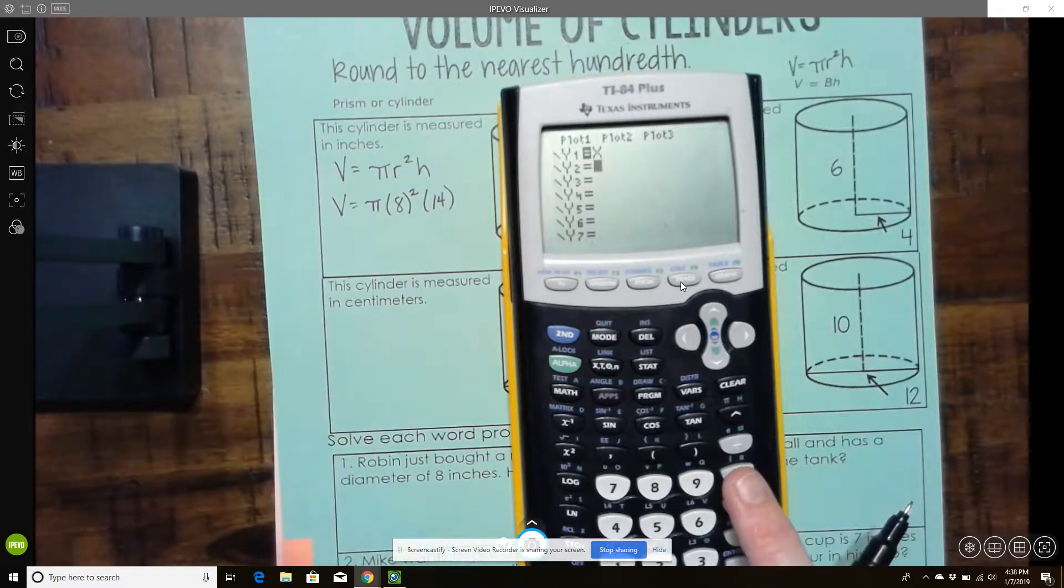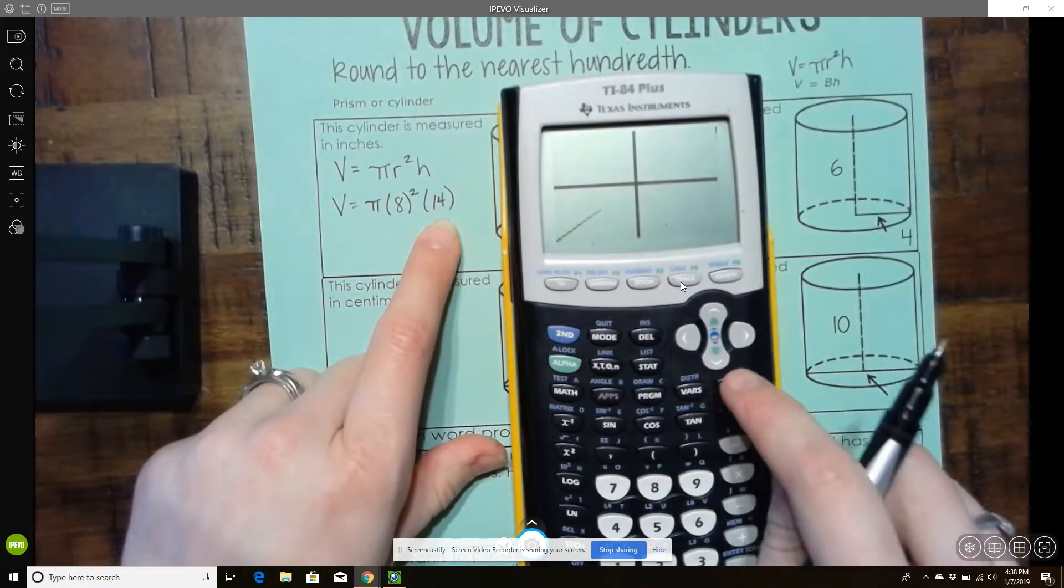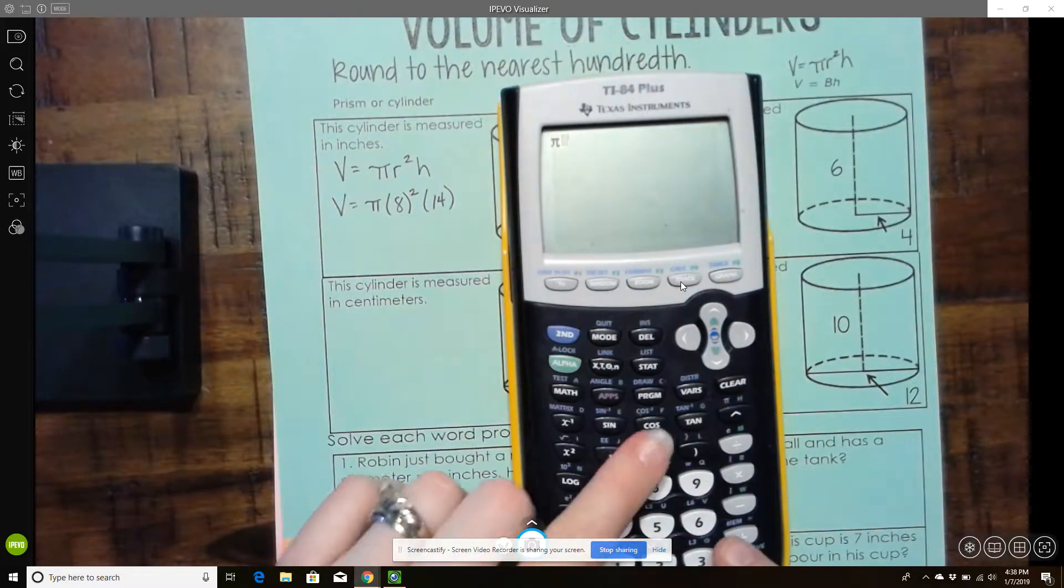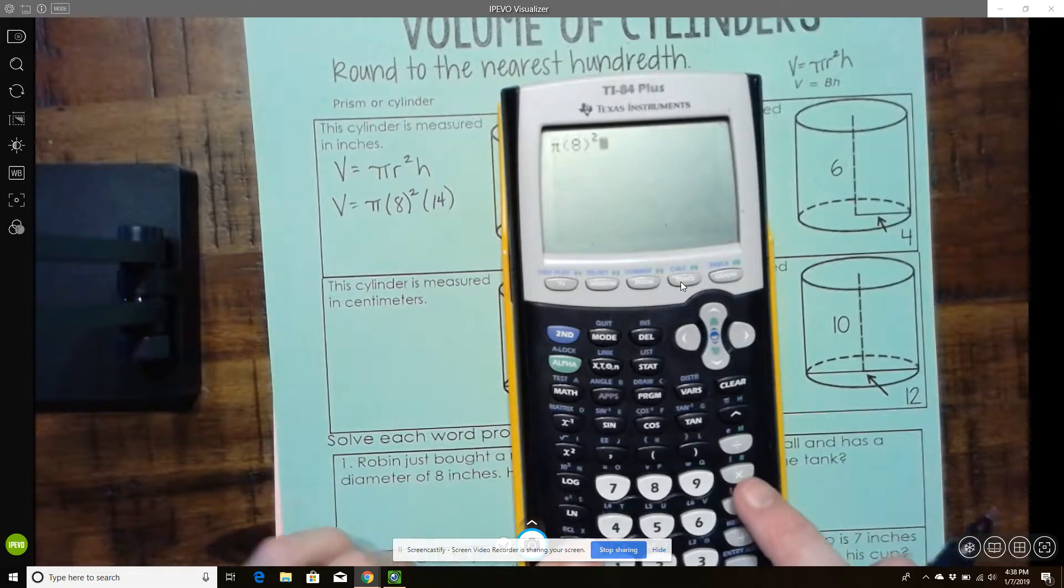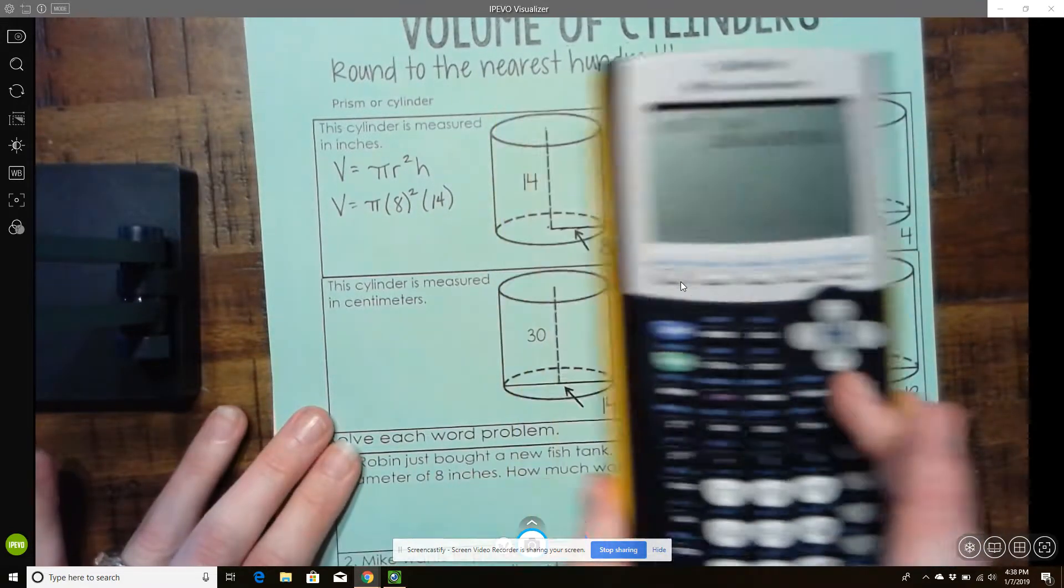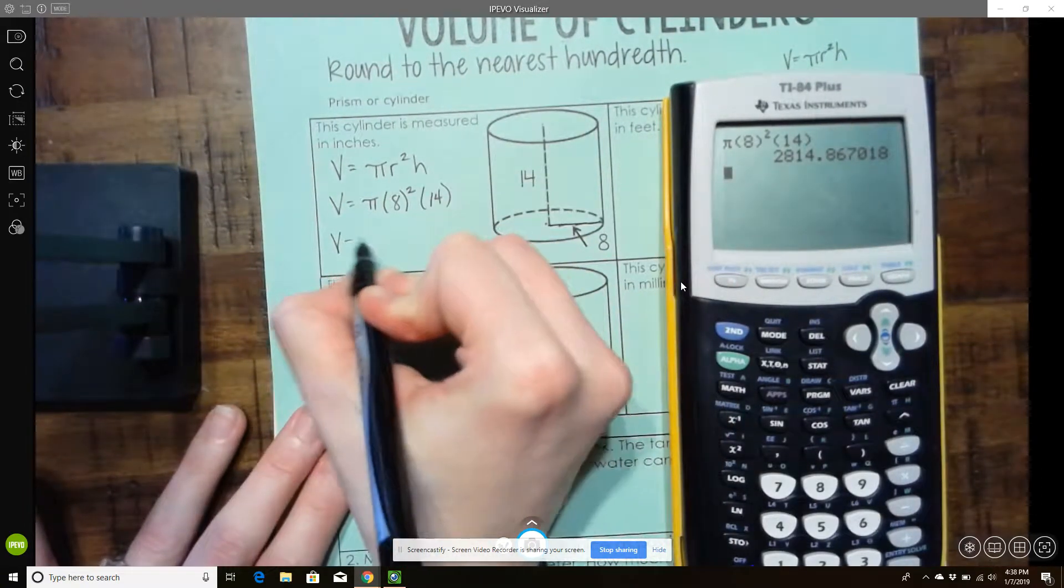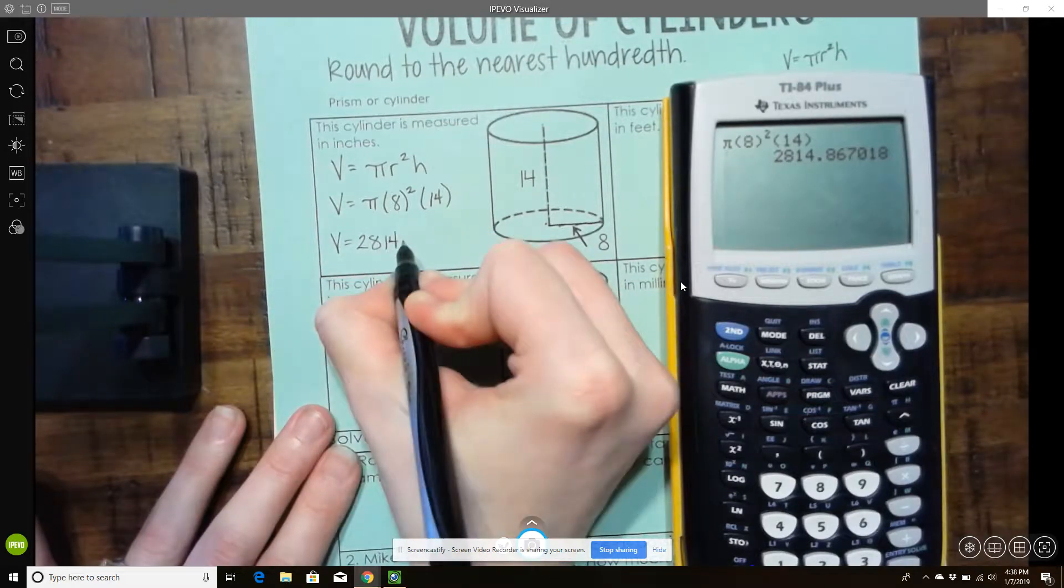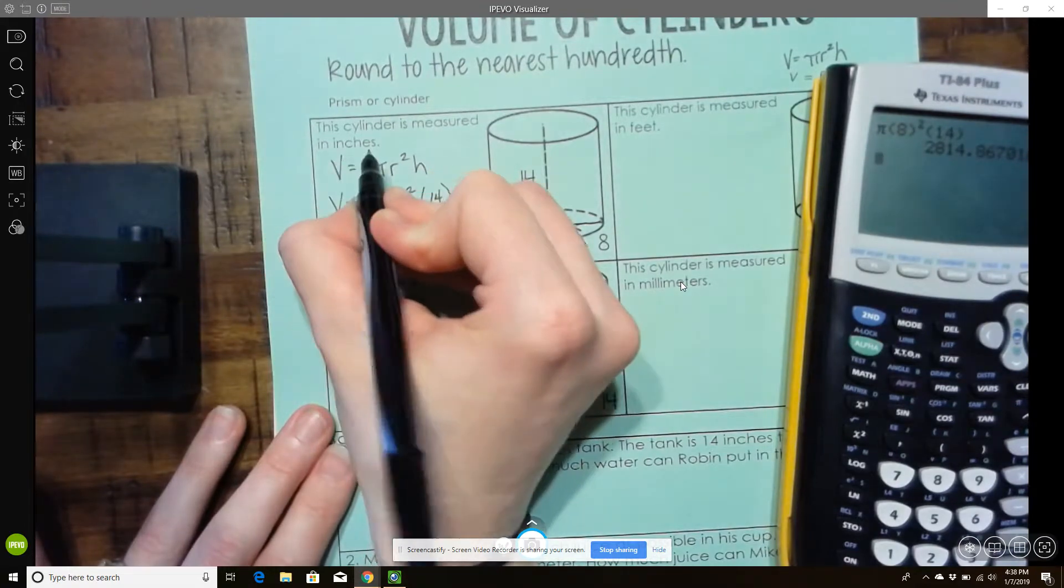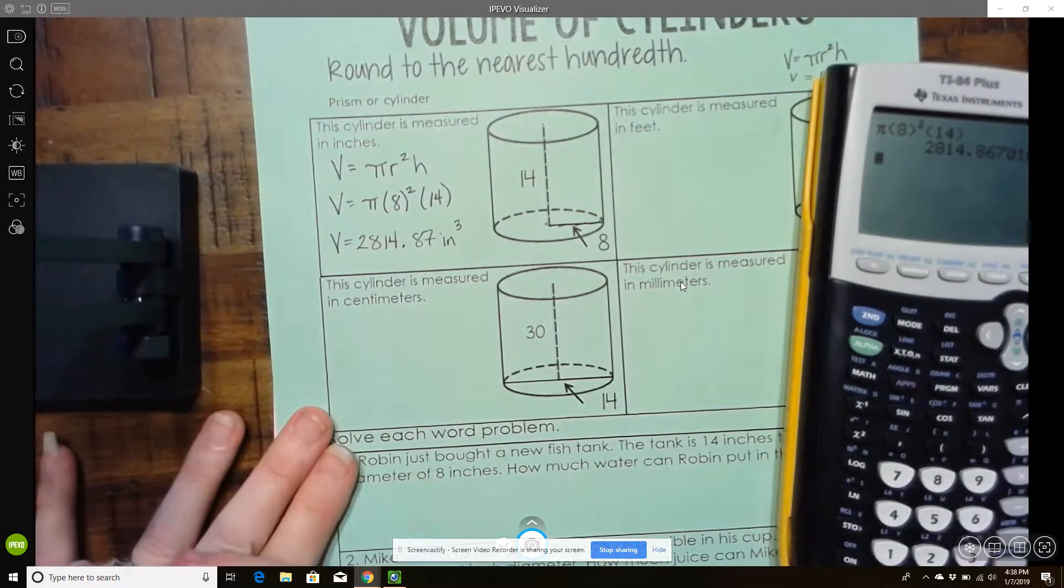But if you have a side like this that has no variables in it, you can just type this in as well. So for this one, I could do pi times 8 squared and then parentheses 14. And so here we're going to round to the nearest hundredth. So my volume here would be 2814.87. Now the cylinder is measured in inches, so my unit would be inches cubed. For volume, we do cubed.